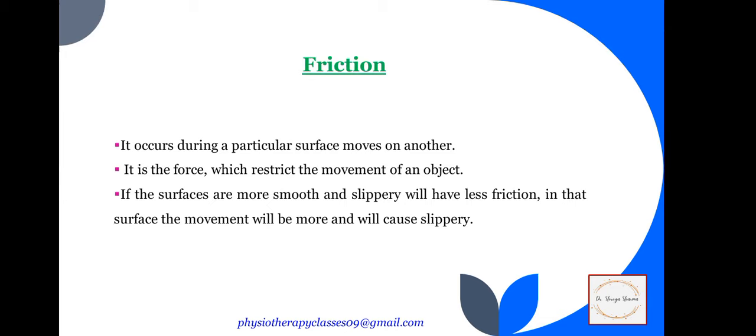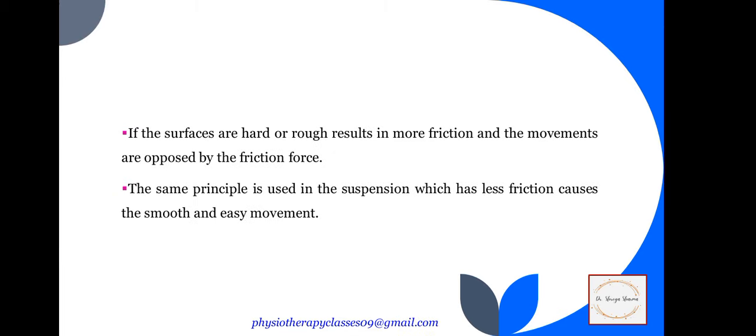If the surface is more smooth and slippery, there will be less friction and the movement will be more. For example, if you go to the bathroom and there are tiles with water on the floor, the floor becomes slippery and you must move very carefully because there is no friction. The same principle is used in suspension therapy: if surfaces are hard or rough, it results in more friction and the movements are opposed by the friction force. Less friction causes smooth and easy movement in suspension.